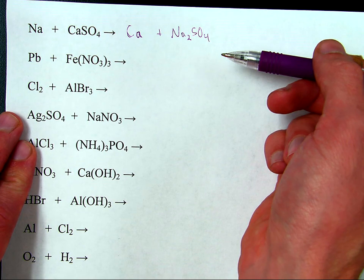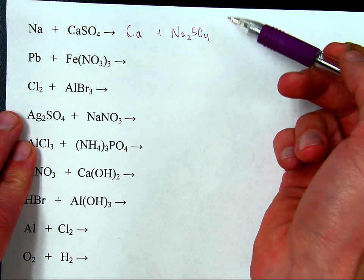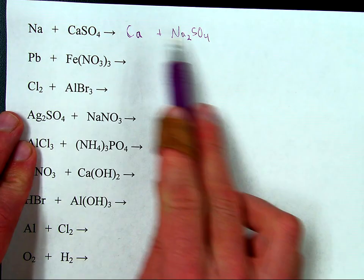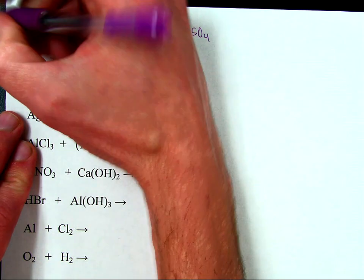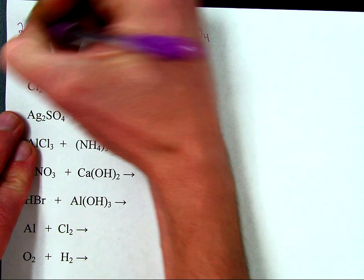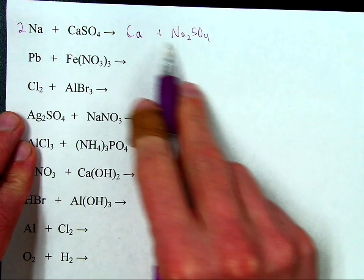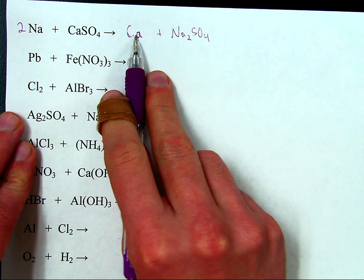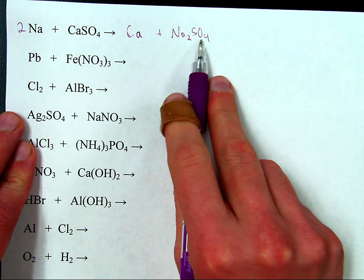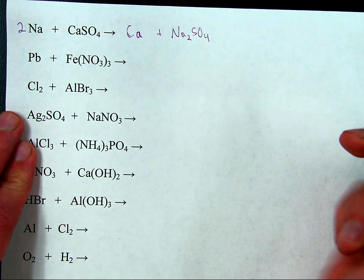Part three: balance the equation. One sodium versus two sodiums — let's fix that. Two sodiums on each side. One calcium, one calcium. One sulfate, one sulfate. Done.